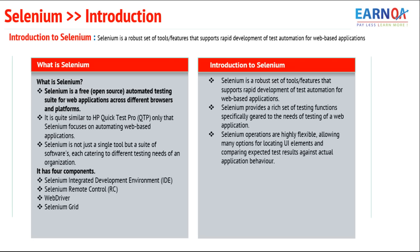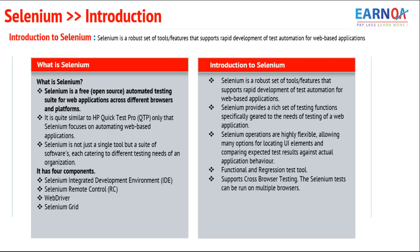Selenium supports different technologies for programming within it. If you know Java, you can use Java; if you know C#, you can use C#; if you know Python, you can use Python — and similarly Ruby and PHP. Selenium is popular for functional and regression automation testing for various web-based applications. It supports cross-browser execution — you can run the same scripts on IE, Safari, Firefox, Mozilla, and Opera — and it supports different operating systems as well.